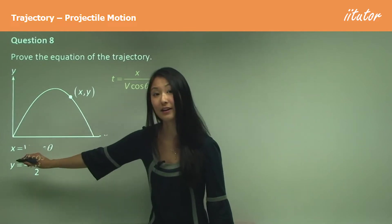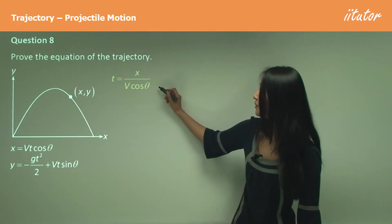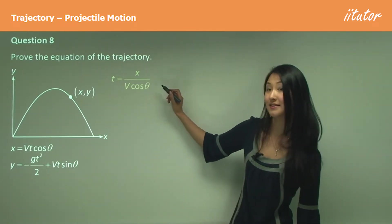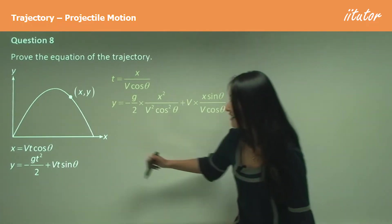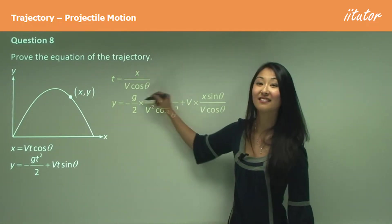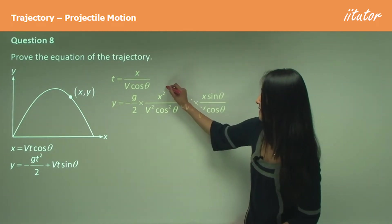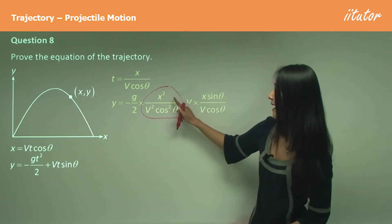Wherever there's t, so here and here, we just substitute that in. That's all we're doing. Because this is t squared, this becomes x squared over v squared cos squared θ, whereas here when it's just t, that's why we're subbing in just x over v cos θ.